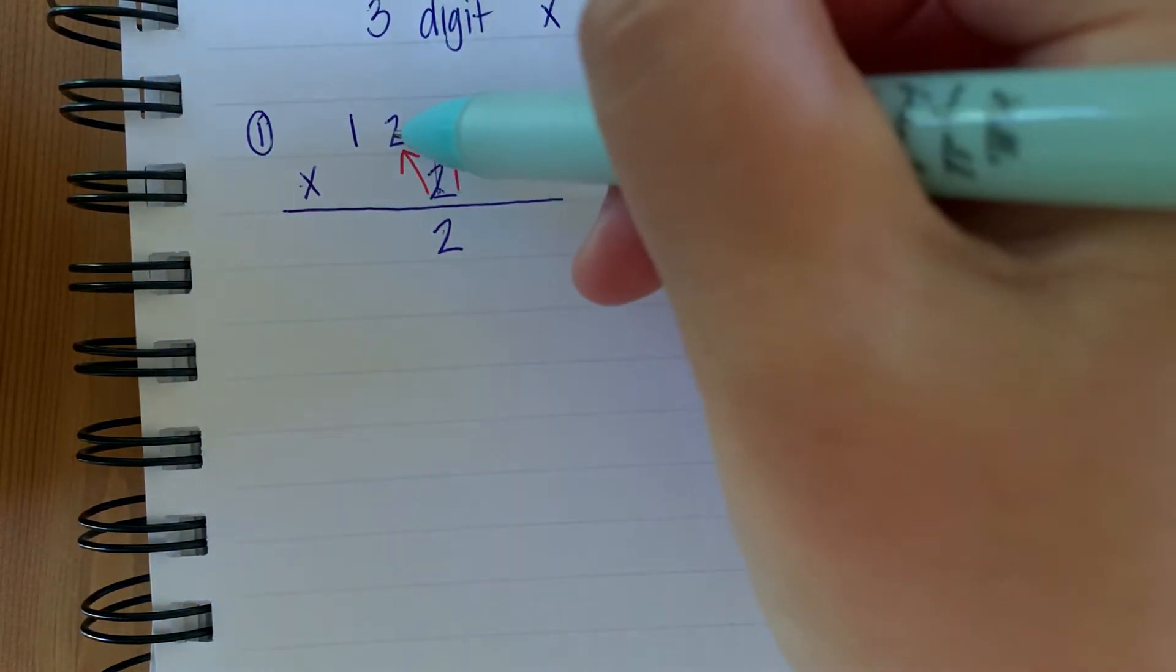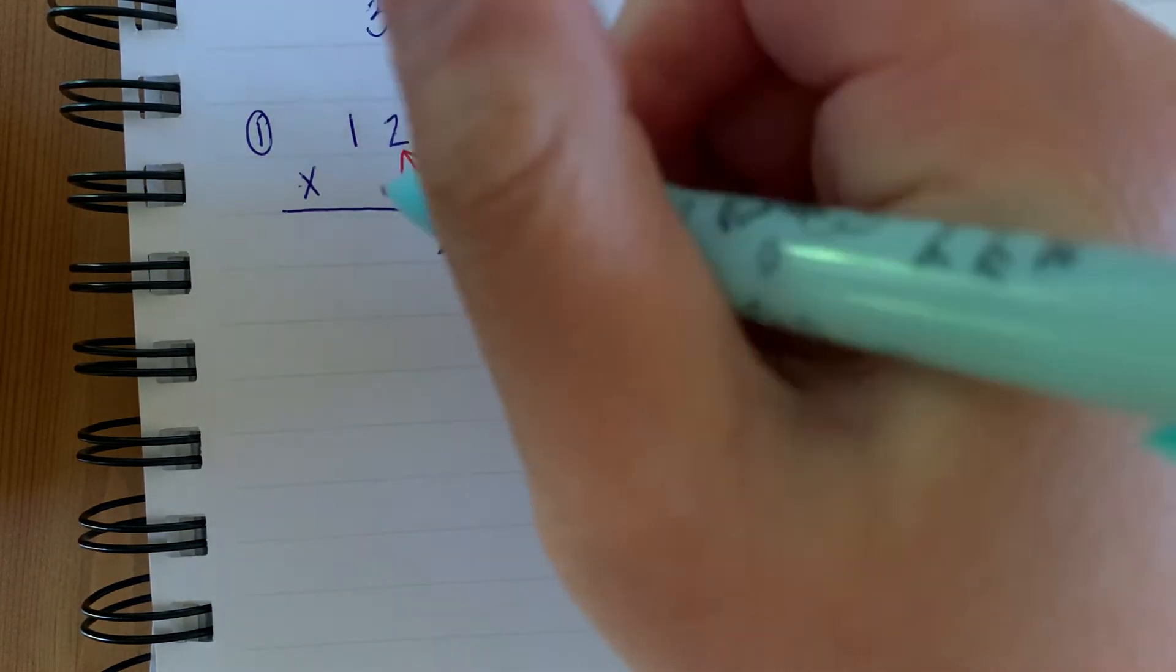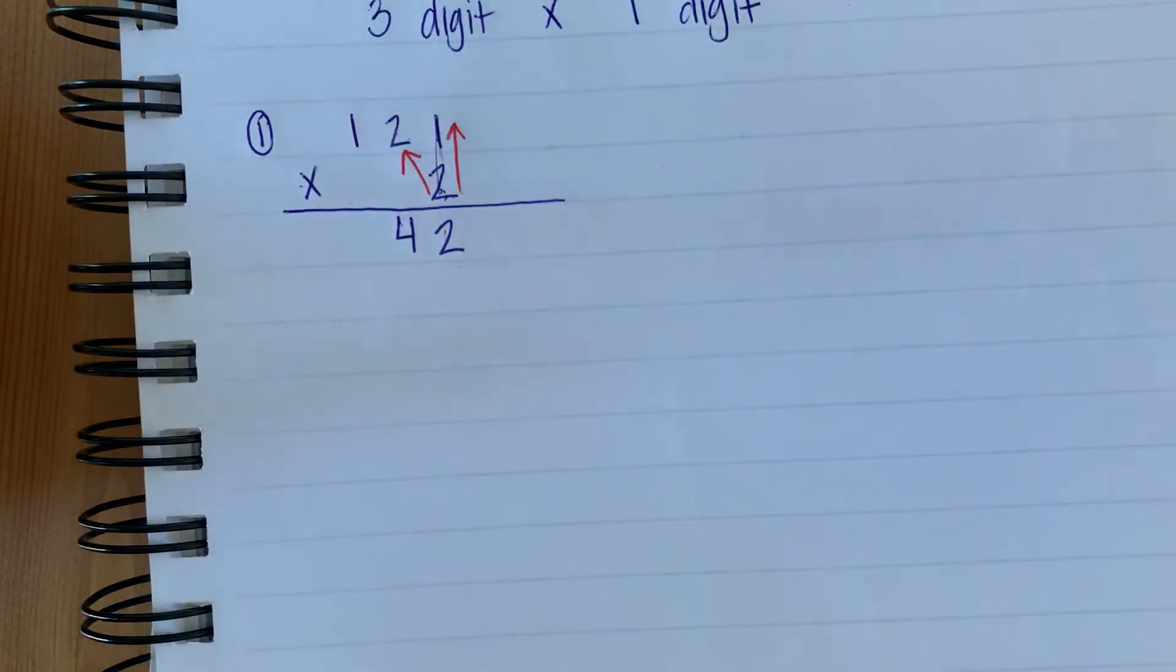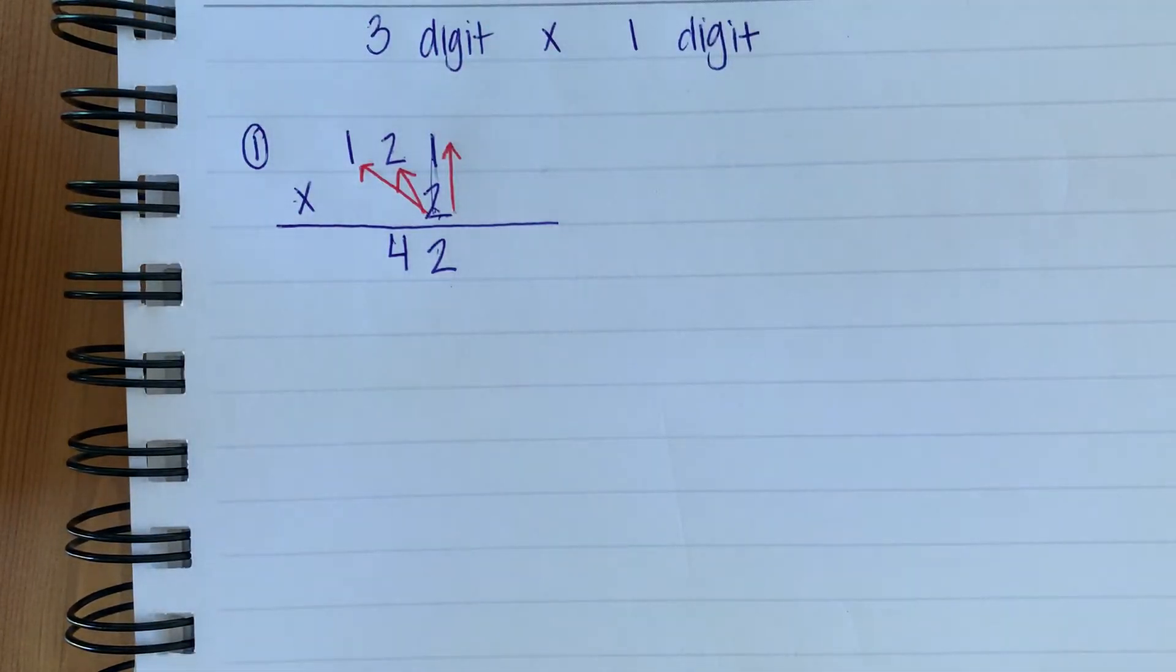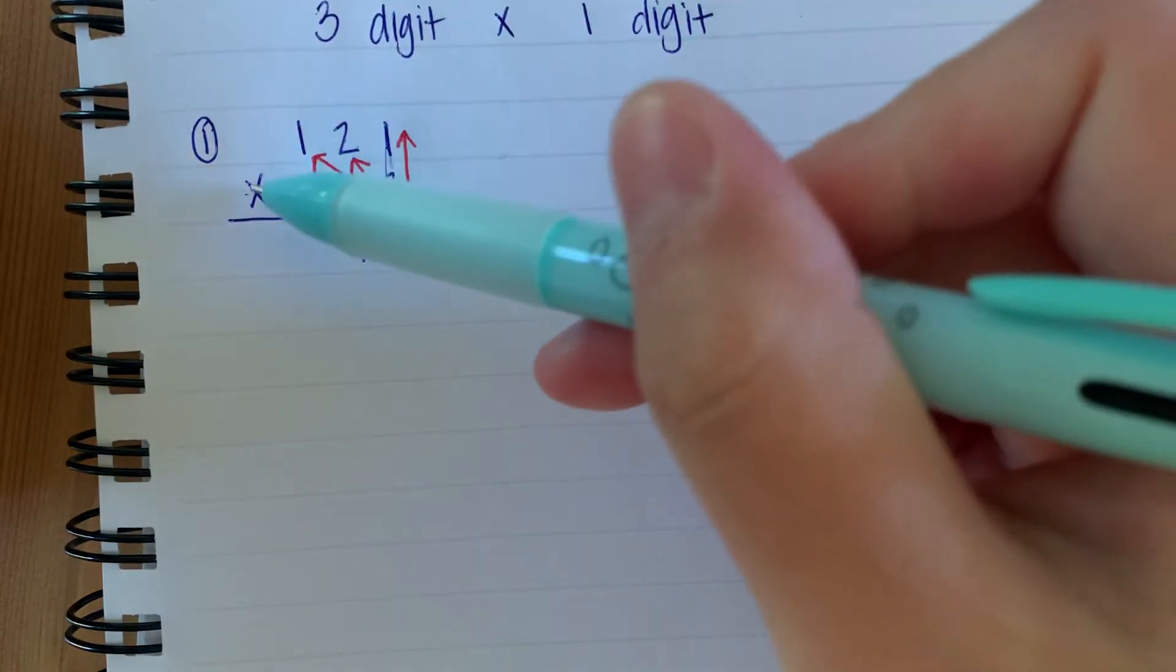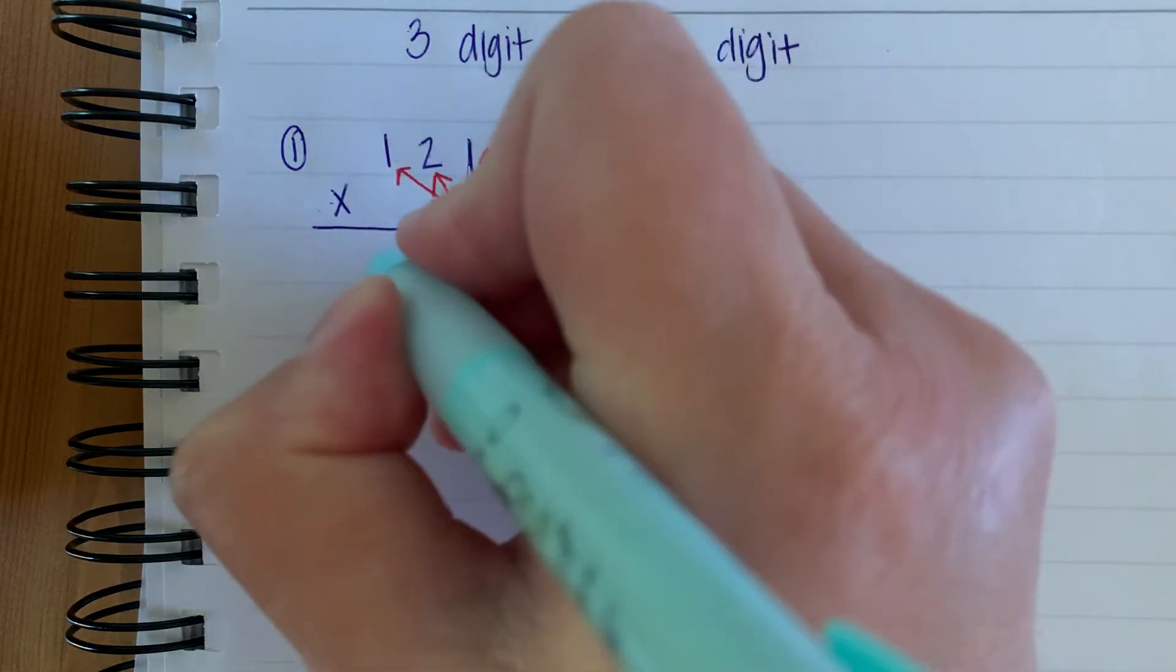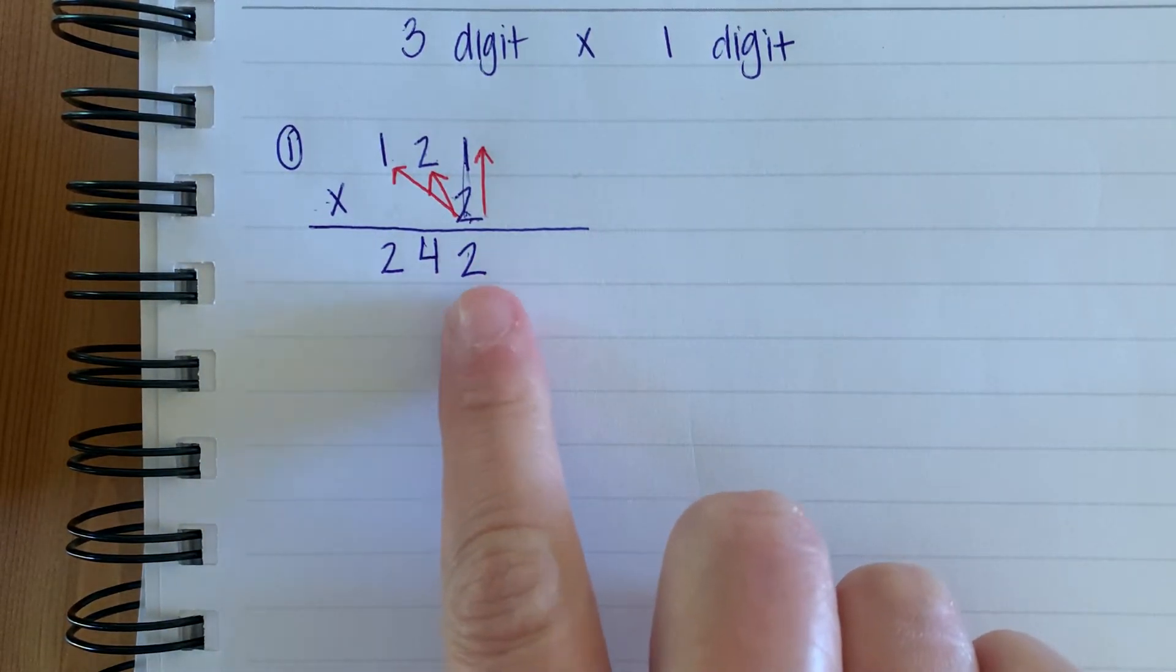Next, we're going to multiply across. Two times two is four. Or you can say two times two. Last, our third digit, you're going to go all the way here to the hundredth place. So my answer is 242.